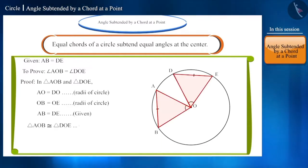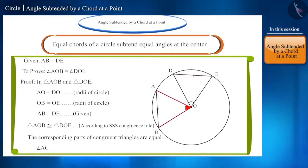Therefore, both these triangles are congruent according to the SSS congruence rule. Hence, angle AOB will be equal to angle DOE.